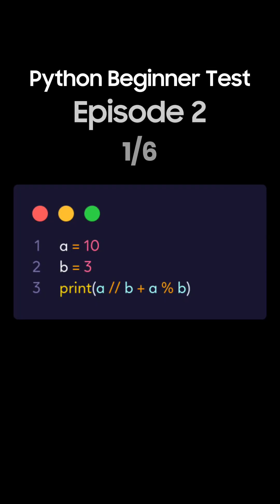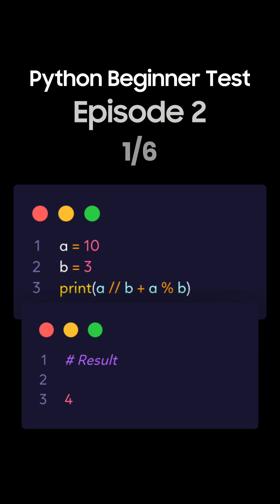Question 1. What's the output of this Python code using arithmetic operators? This is the correct answer. Because 10 divided by 3 using floor division gives 3, and 10 modulo 3 gives 1. So the result is 3 plus 1, which equals 4.